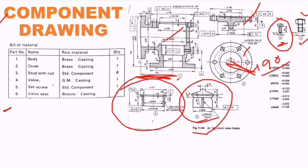Sometimes the question may ask to draw the sectional front view or sectional top view of some figures. In that case, we should draw the figure and indicate only the half portion with hatching. This half-portion hatching means that half portion is shown as a sectional figure. This is a very important factor every student should understand.